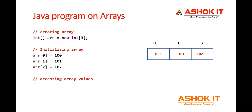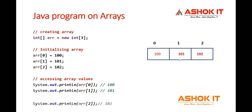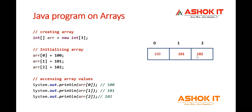How to access the values? By using the index, we can also access values. If you access arr[0], you get 100. arr[1] gives 101, and arr[2] gives 102. Like this, we can create the array, initialize it, and retrieve values from the array based on the index.